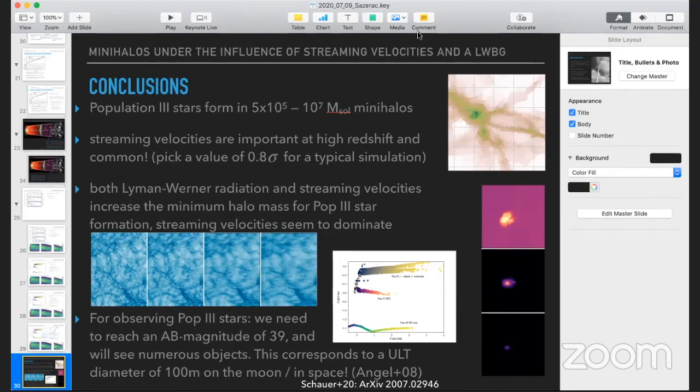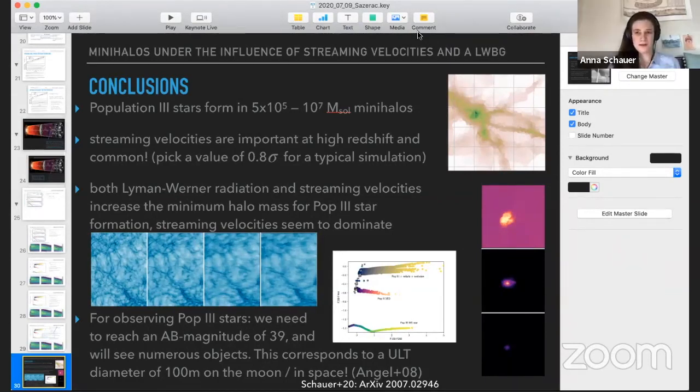All right. Thank you. One more question. Is Lyman-Werner background in your simulation imposed or produced by the stars in your simulation? No, it's imposed. So in order to do this parameter study, it is not self-consistent, but it is an external Lyman-Werner background. We turn it on at the redshift where we first find our star formation conditions to be fulfilled, which is redshift 24.